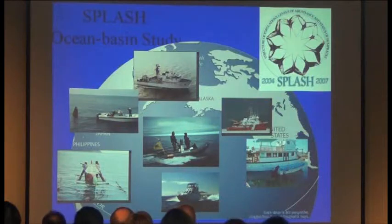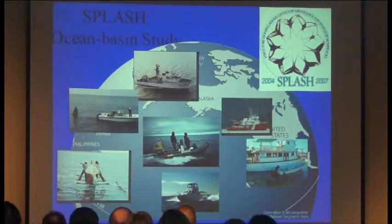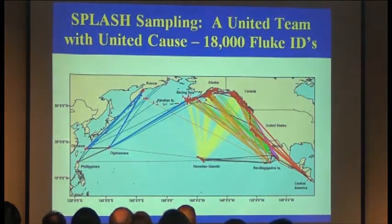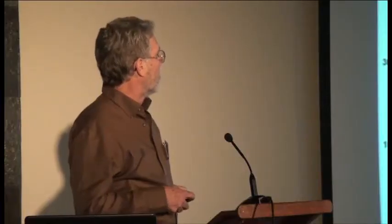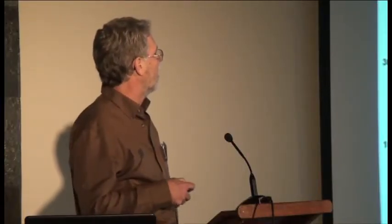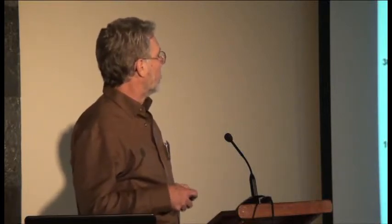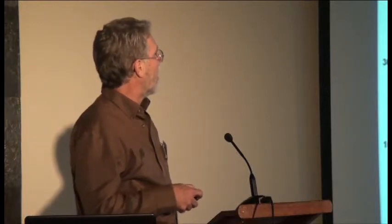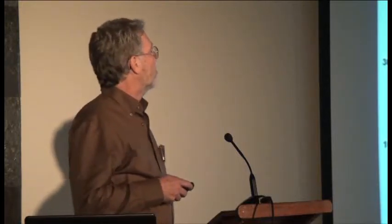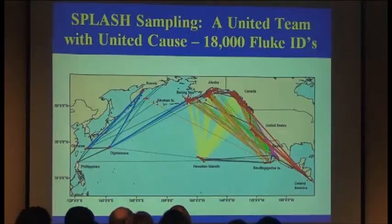The SPLASH project was a collaboration of researchers using a variety of platforms but the same basic sampling techniques throughout the North Pacific. The migration situation is complicated — animals from islands off Mexico cross paths with animals from the Hawaiian Islands when going to their separate feeding areas. In SPLASH we managed to get about 18,000 high-quality fluke photographs from all of these areas.